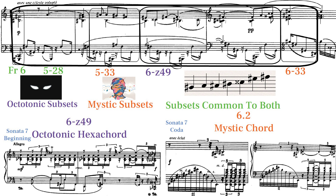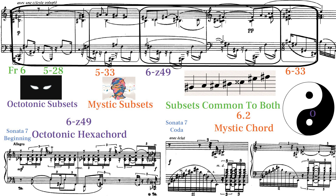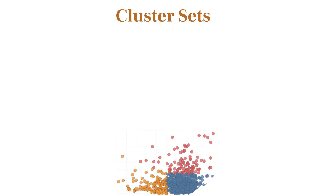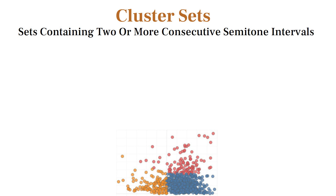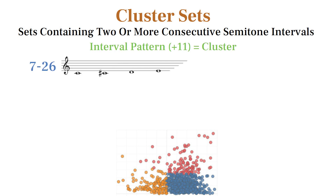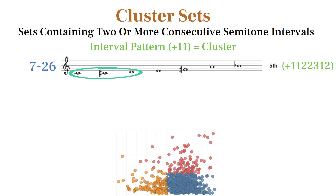Since the two sets are only one semitone away from each other, he sometimes substitutes octatonic sets with mystic sets to create contrast. Cluster sets are sets that have a cluster of two or more consecutive half-steps. 726 is a cluster set because it contains the consecutive half-steps C, C-sharp, and D.